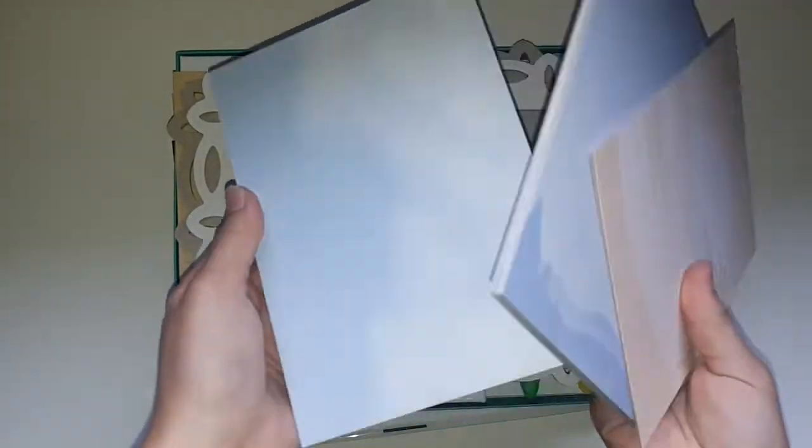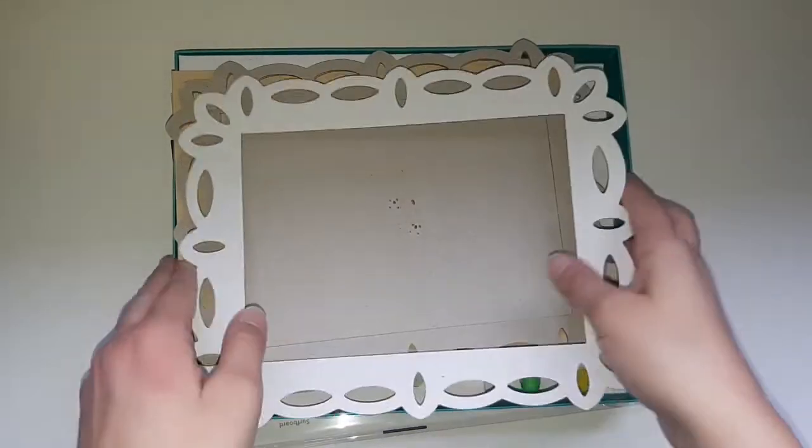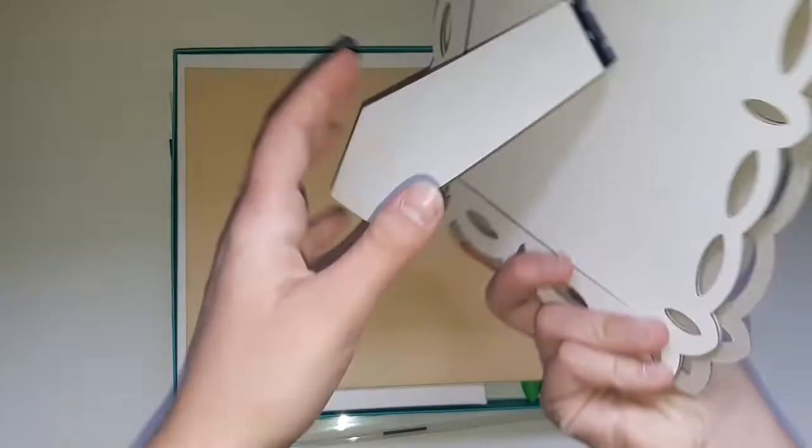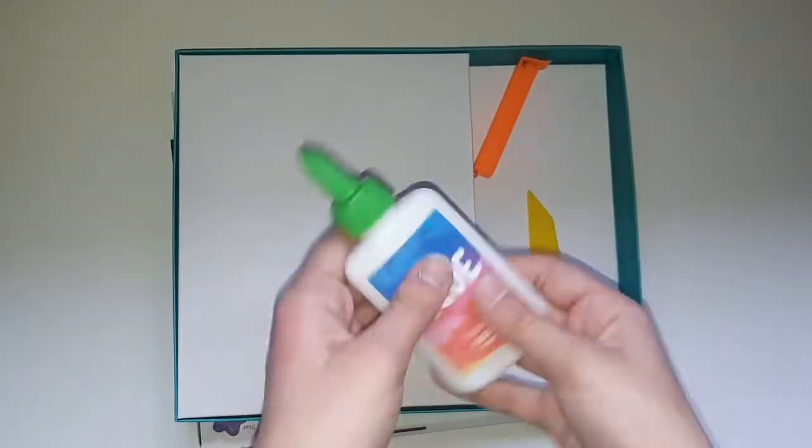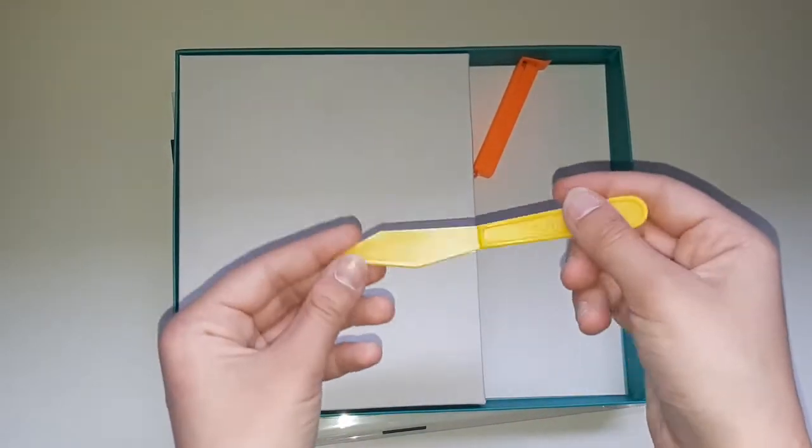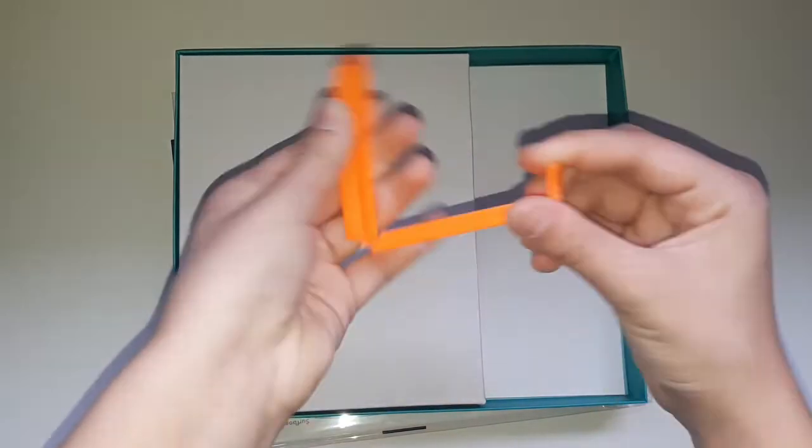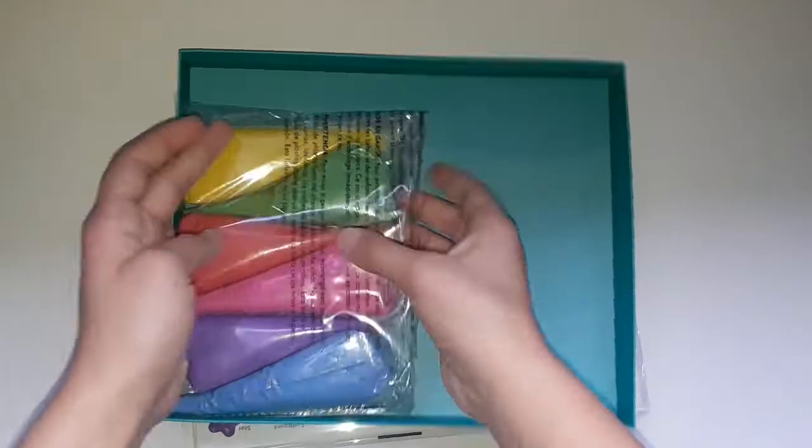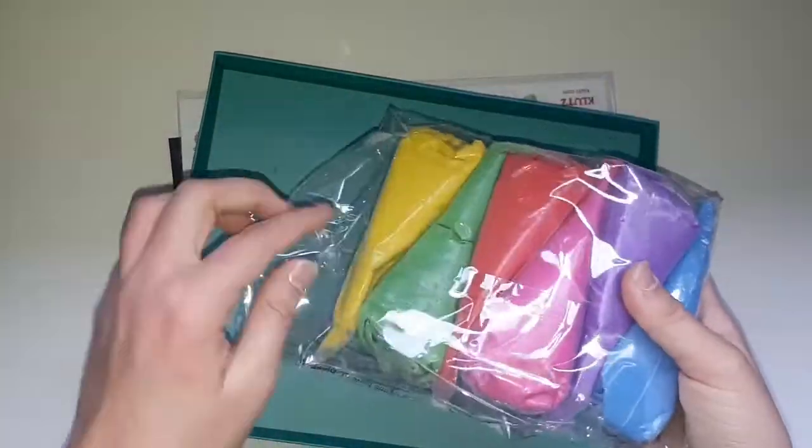So it came with these different background boards, a frame, this piece of paper, some glue, a spatula, and a clip, and all these different kinds of sand.